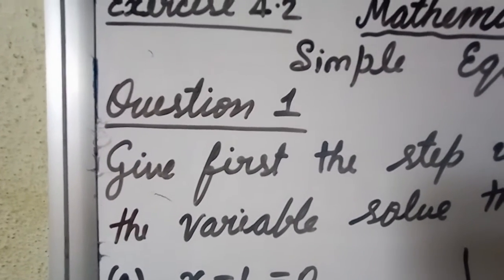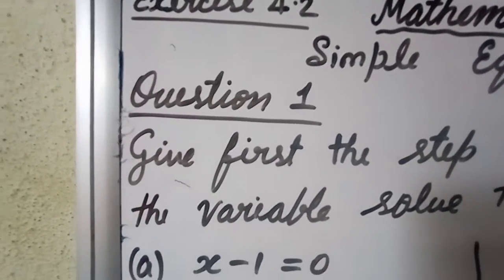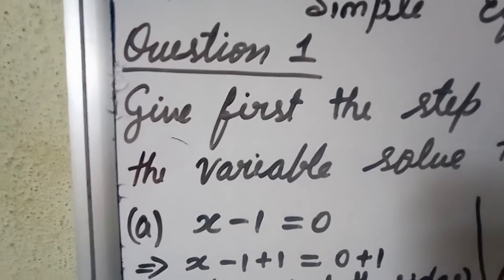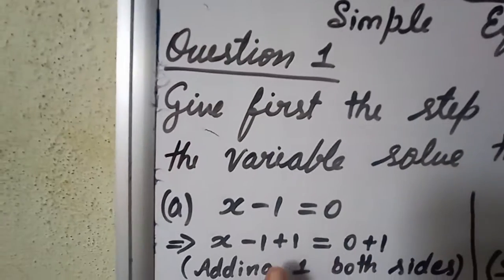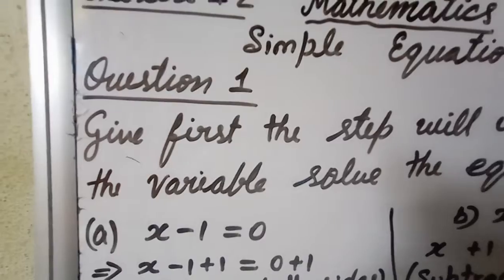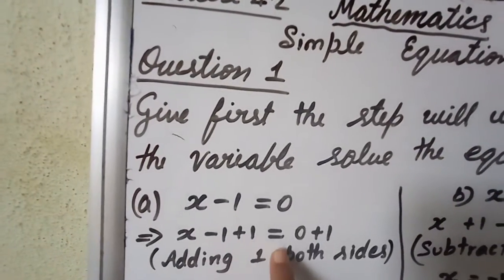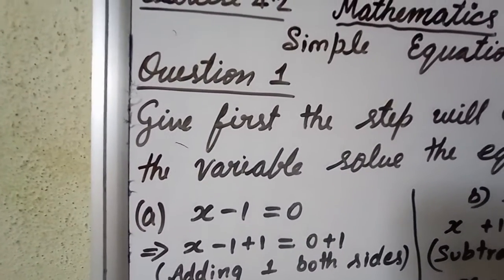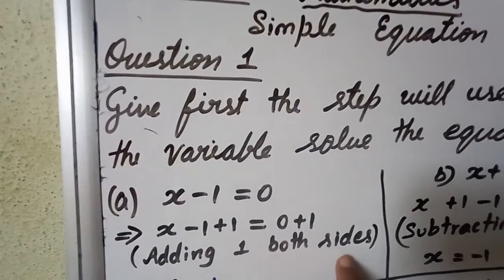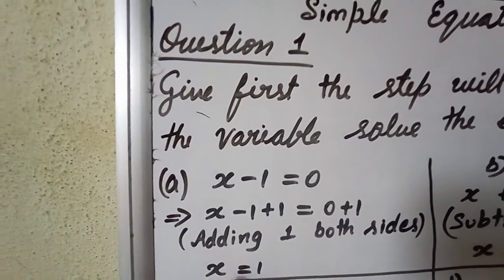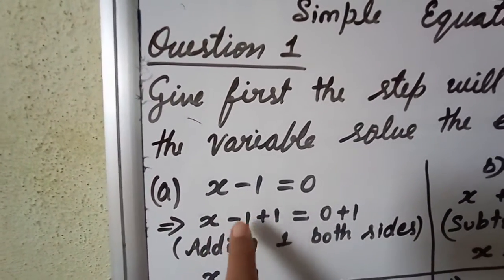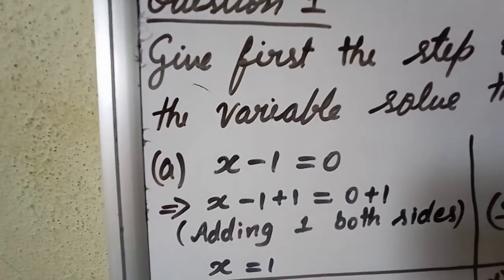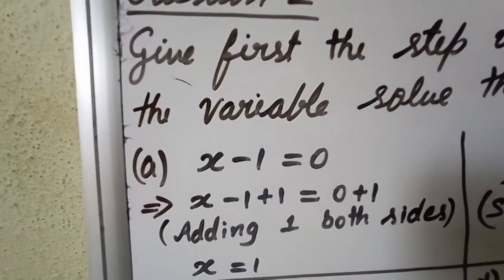So: x minus 1 plus 1 equals 0 plus 1 — adding 1 to both sides. Minus 1 plus 1 becomes 0, and on the right hand side 0 plus 1 gives 1. So we have got the solution: x is equal to 1.